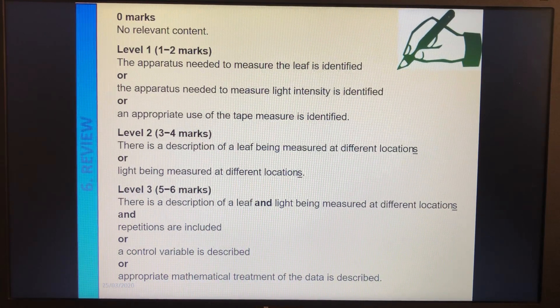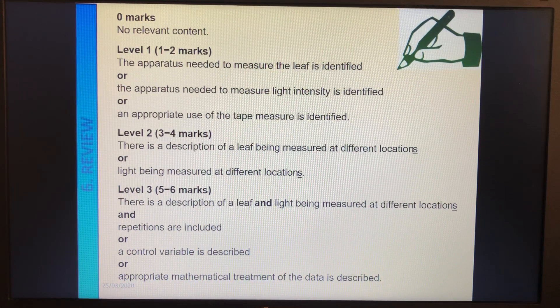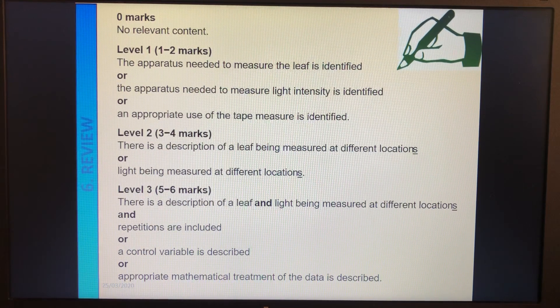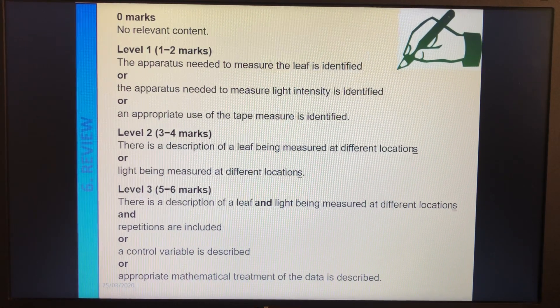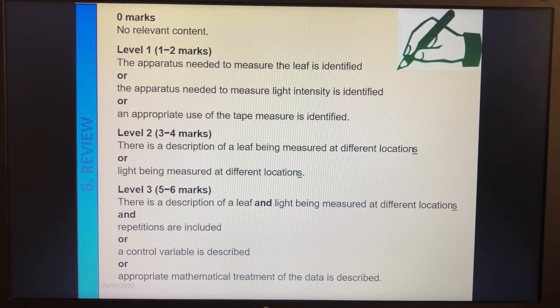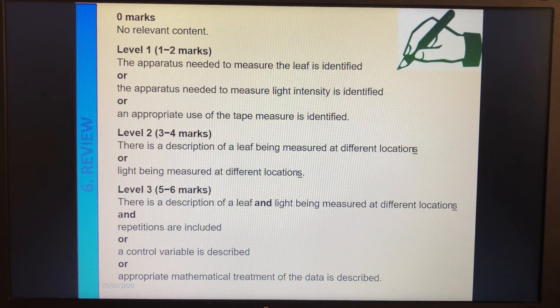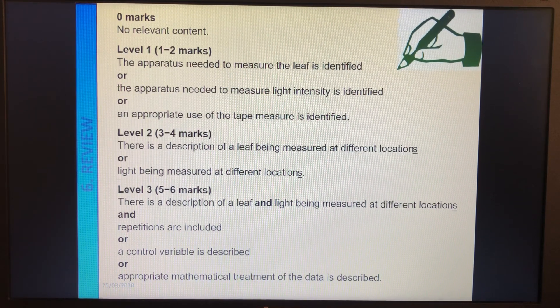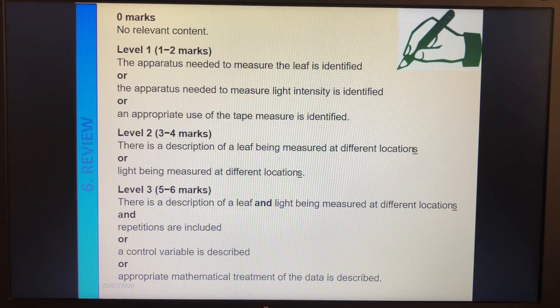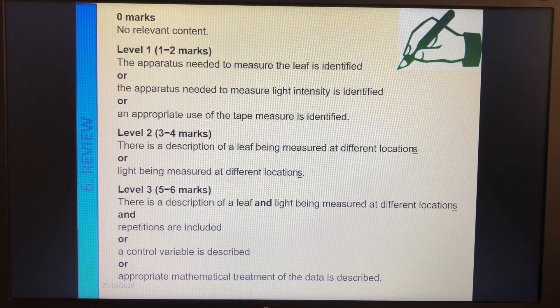Okay, this is the kind of initial guidance. I don't usually show this, but I'm going to talk through what it is. To get five to six marks, there needs to be a description of the leaf and the light being measured at different locations. Repetitions need to be included. So the fact that you're going to repeat it, at least one control variable is described and mathematical treatment of the data is described. So the idea of graphing it and then seeing correlations, that kind of thing.